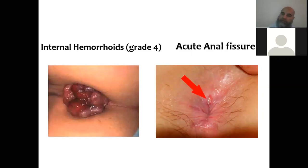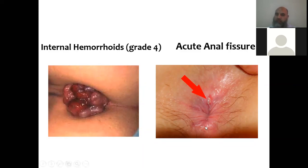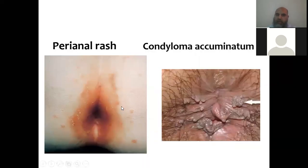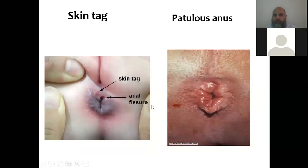On inspection, without going inside: you may find grade four hemorrhoid outside, or an anal fissure with spasm visible at the anus. You may see a rash — dermatological disease — or warts such as condyloma acuminata. Many diseases can be found just from the skin area. A skin tag indicates a chronic anal fissure inside — diagnosis made without going inside.